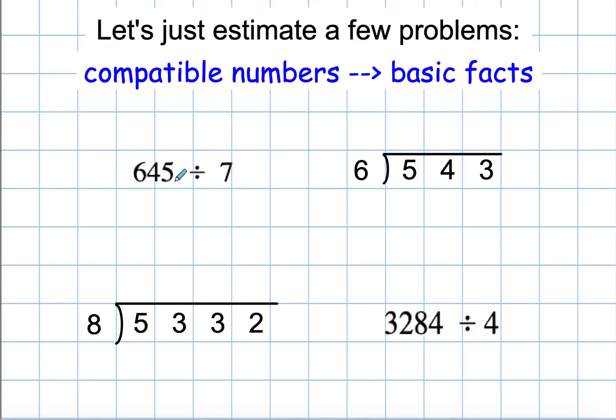So for this first example, 645 divided by 7, I'm going to focus on my multiples of 7, because that's what I'm dividing by. 7, 14, 21, 28, 35, 42, 49, 56, 63, 70. And I'll stop there.